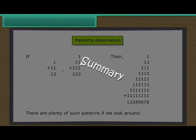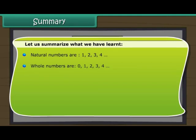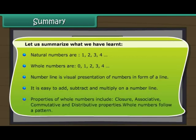Summary: Let us summarize what we have learned. Natural numbers are 1, 2, 3, 4, and so on. Whole numbers are 0, 1, 2, 3, 4, and so on. A number line is a visual presentation of numbers in the form of a line. It is easy to add, subtract, and multiply on a number line. Properties of whole numbers include closure, associative, commutative, and distributive properties. Whole numbers follow a pattern.